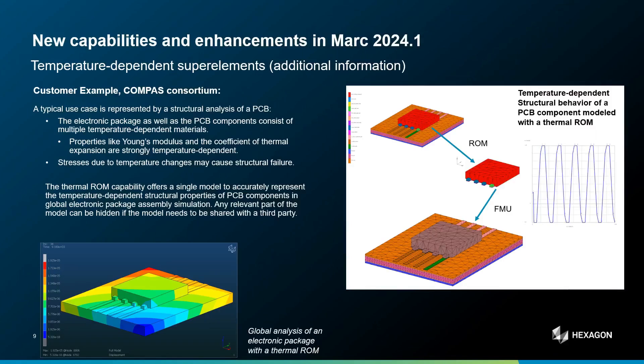Here you have an example for the semiconductor industry. The electronic package as well as the PCB components consist of multiple temperature-dependent materials. For example, Young's modulus could depend on temperature, or the coefficient of thermal expansion. This thermal ROM capability offers a single model to accurately represent the temperature-dependent structural properties of each PCB component in a global electronic package assembly simulation.